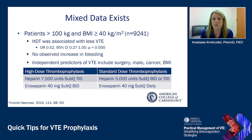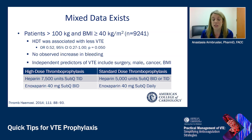The first study looked at patients over 100 kilos with a BMI of at least 40, including over 9,000 patients. High-dose thromboprophylaxis was defined as either heparin 7,500 units sub-Q TID or enoxaparin 40 sub-Q BID. Standard dose included heparin 5,000 sub-Q BID or TID and standard enoxaparin dosing. High-dose thromboprophylaxis was associated with a lower occurrence of VTE with an odds ratio of 0.52, with no observed increase in bleeding. Independent predictors of VTE included surgery, male gender, cancer, and increasing BMI, supporting the use of high-dose thromboprophylaxis.